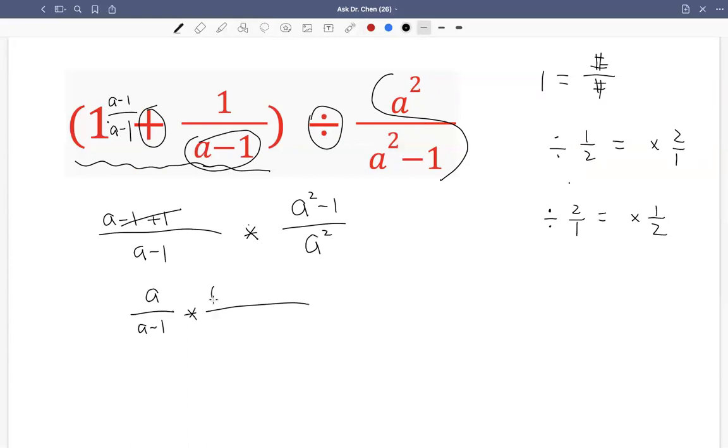A squared minus 1 is the difference of two squares. That can be factored as a minus 1 times a plus 1. Then a squared is a times a.